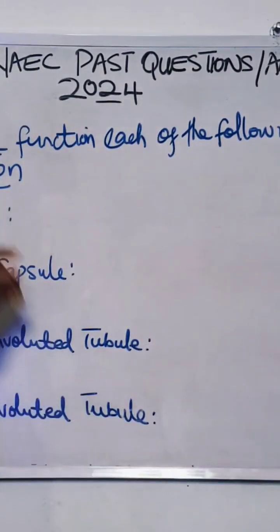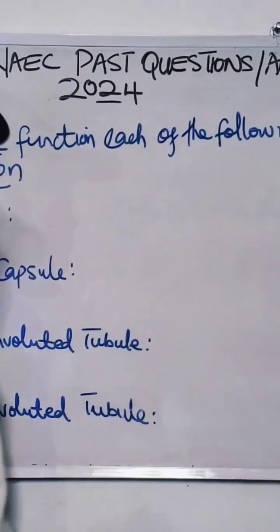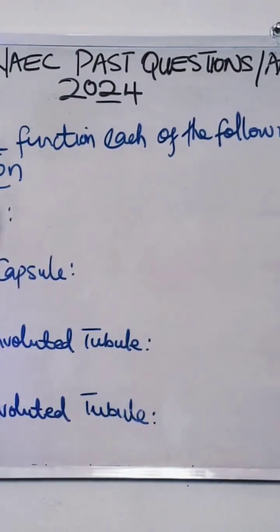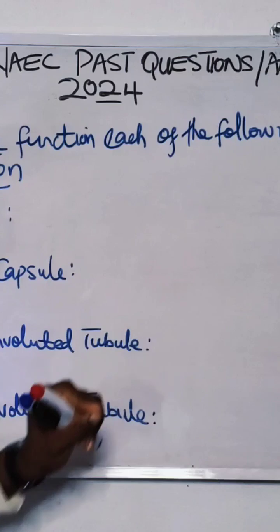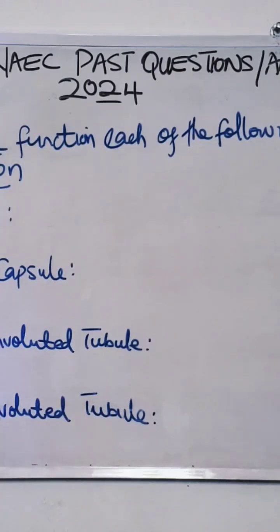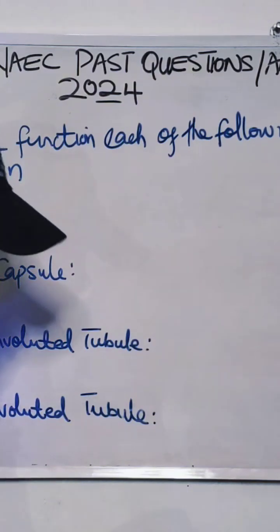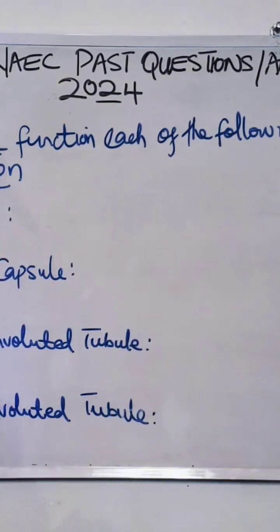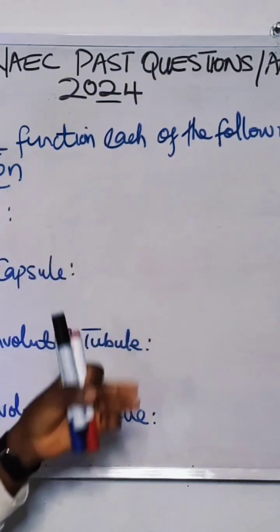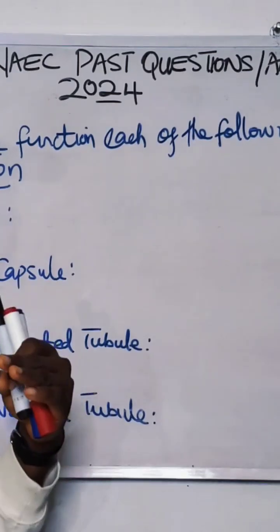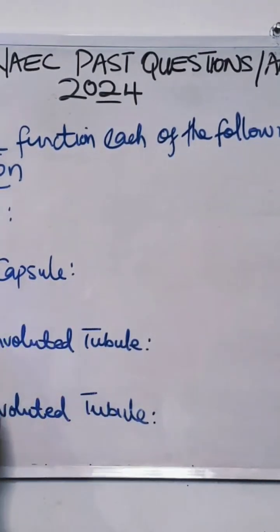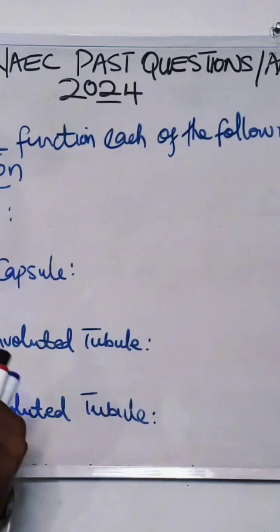In this video we will focus on the 2024 past question. Number one, which is A, it says: state one function of each of the following parts of the nephron. The first part they gave us is the glomerulus. What is the major function of the glomerulus? It's very simple. Students often talk about explaining the term, but you are not asked to explain the term — you are just asked to state the functions.